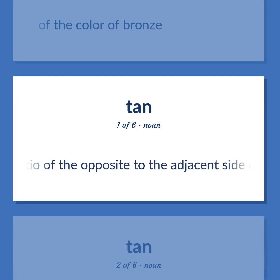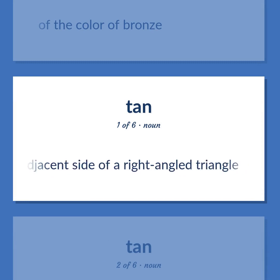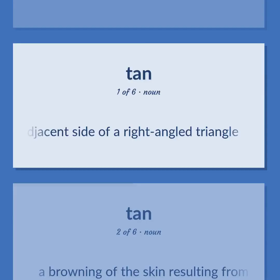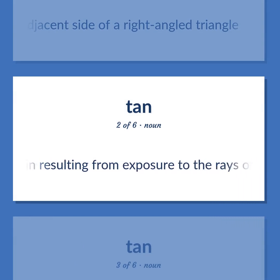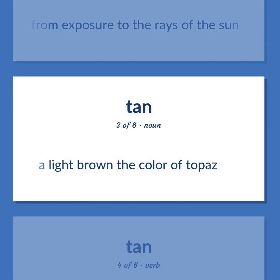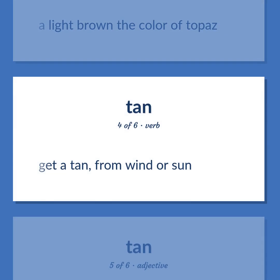Ratio of the opposite to the adjacent side of a right-angled triangle. A browning of the skin resulting from exposure to the rays of the sun. A light brown, the color of topaz. Get a tan from wind or sun.